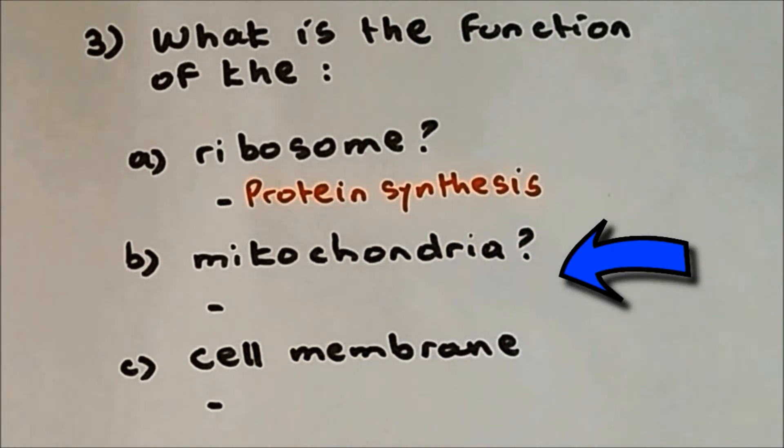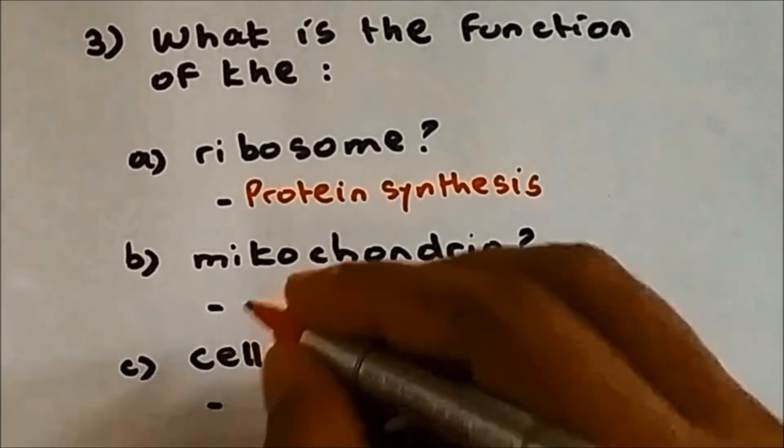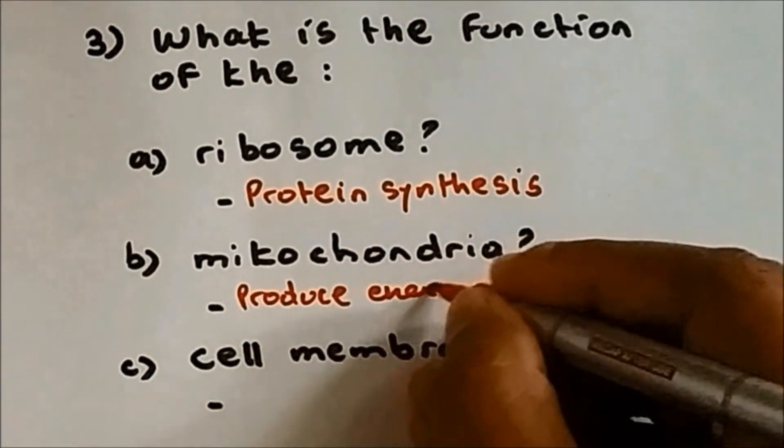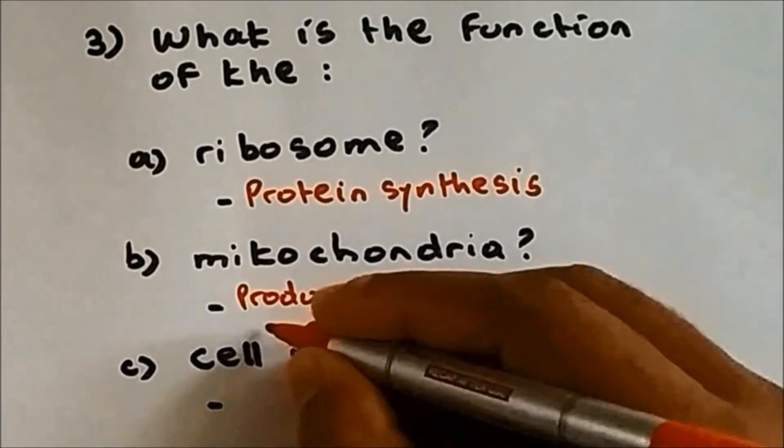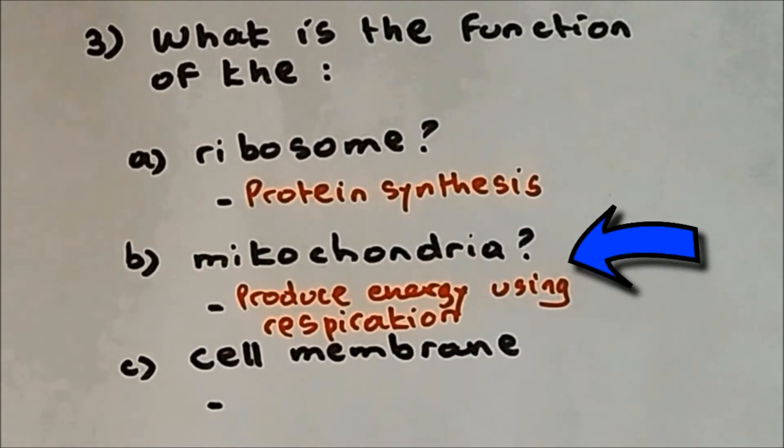Now mitochondria. The function of mitochondria is to produce energy by performing the process of respiration. So I am going to write, produce energy using respiration. So inside the mitochondria the process of respiration takes place, and therefore mitochondria produces energy.